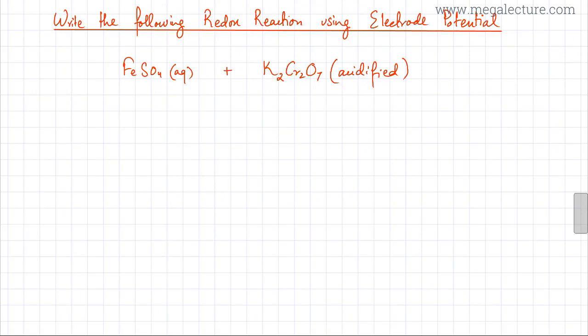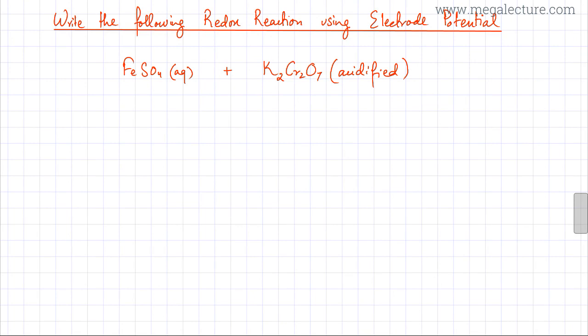In this lecture, we're going to try and predict the redox reaction with the help of electrode potentials. The reaction we need to predict is between FeSO4 aqueous and acidified potassium dichromate K2Cr2O7. We need to figure out which substance gets oxidized, which gets reduced, and we need to figure out the overall equation for this reaction.